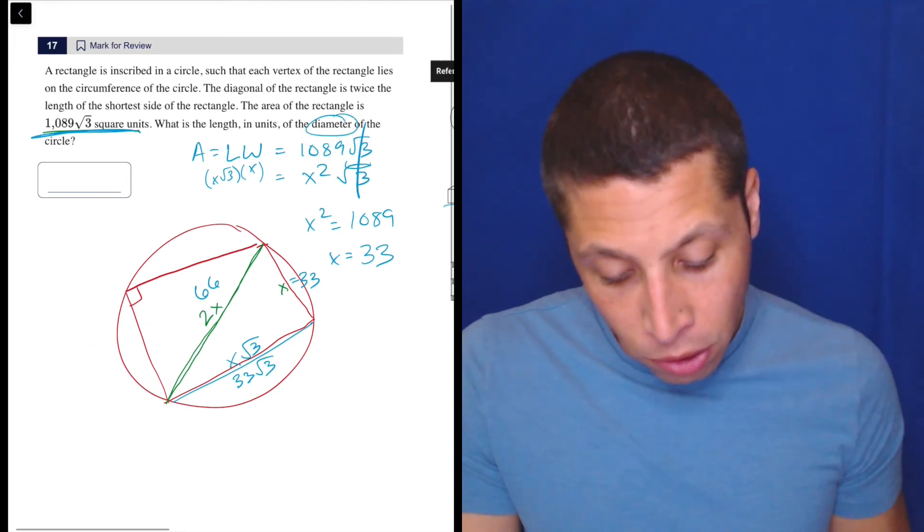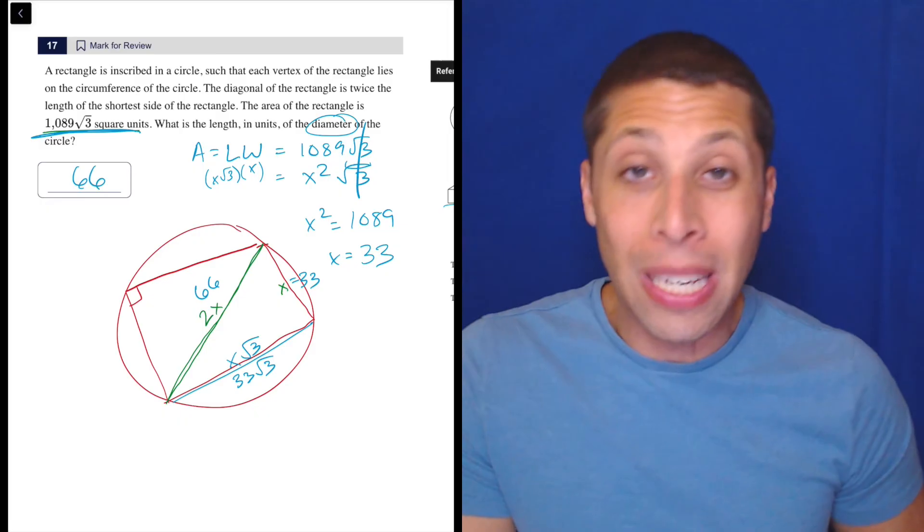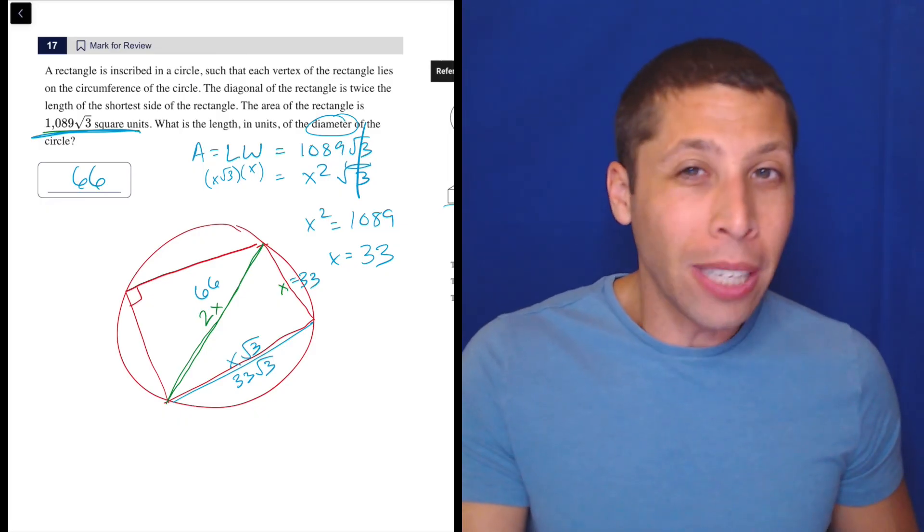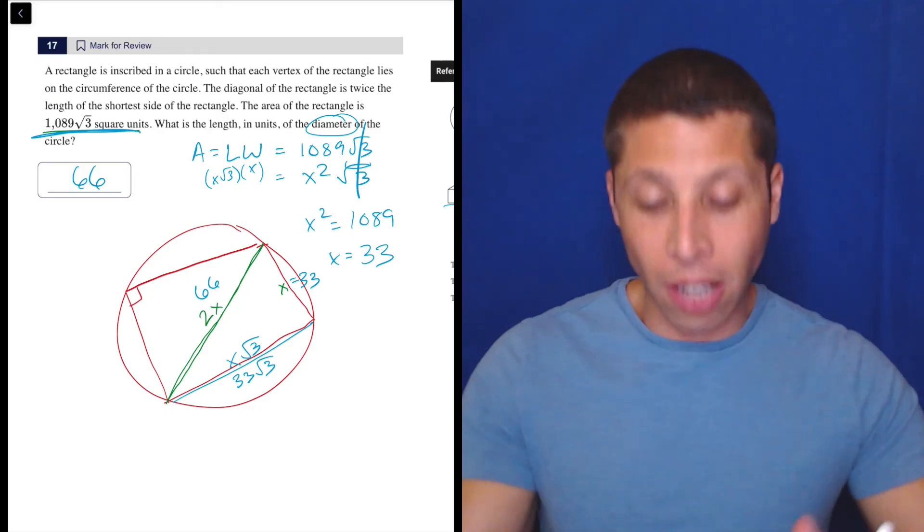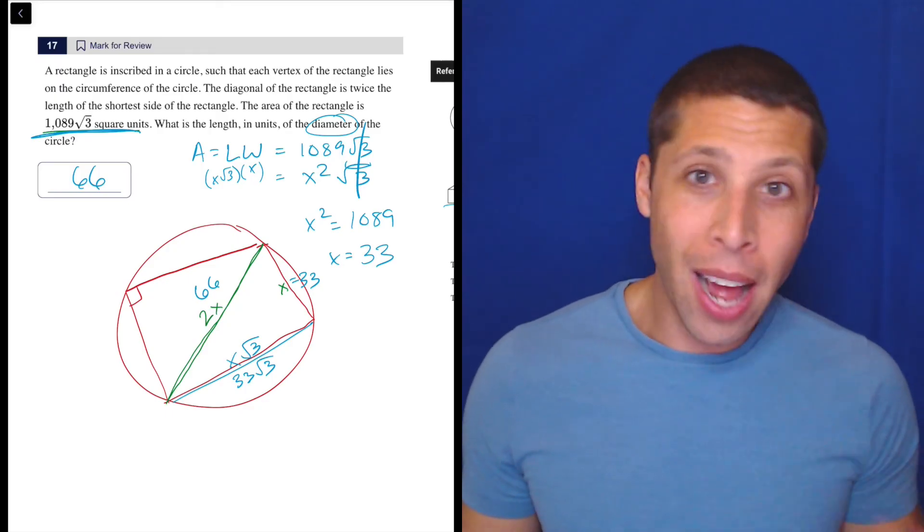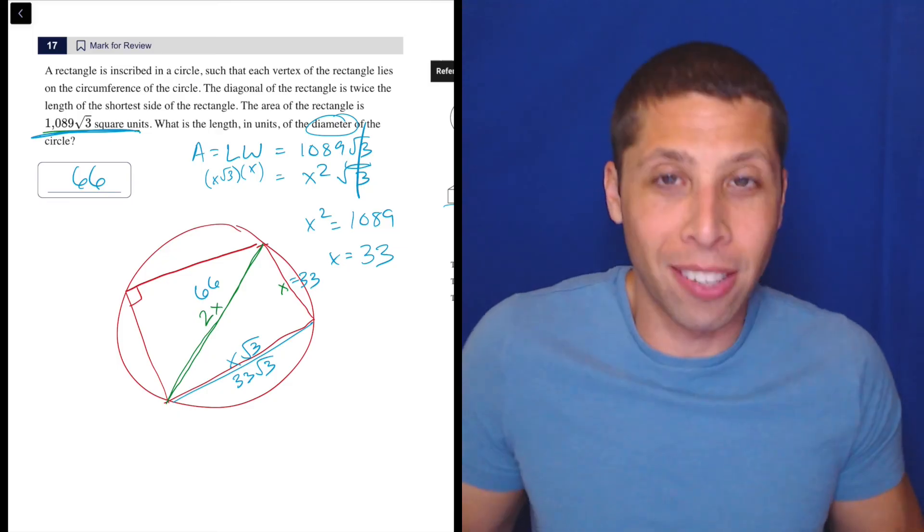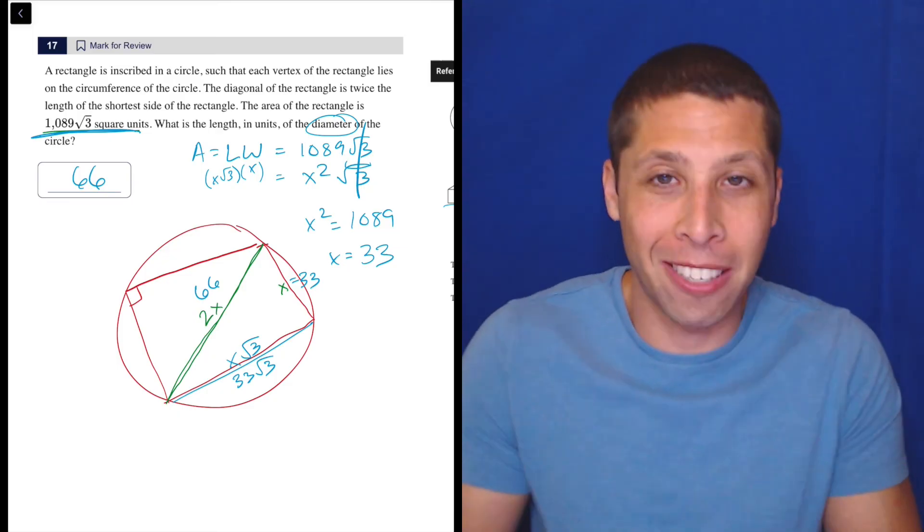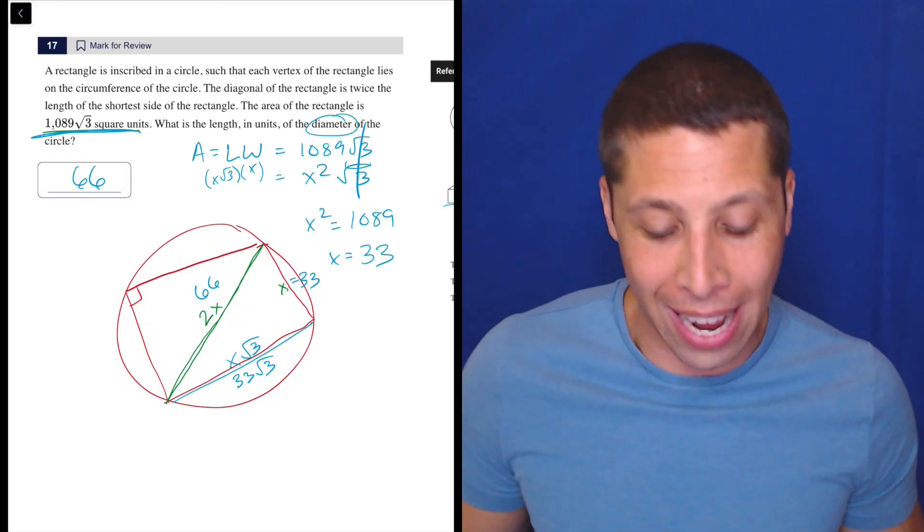And what do they want? The diameter of the circle is 66 because that's also the diagonal of the rectangle. Hopefully you drew your picture such that that was obvious. But if not, like, what else is it going to be, right? You're out of options here. It kind of has to take that path. That's the simplest path. It has to go that way.